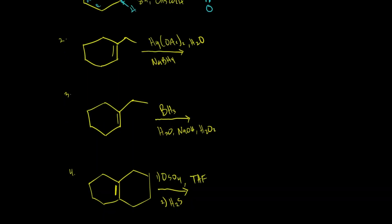Let's go ahead and try to predict the product. I know I have a double bond reacting with oxymercuration-demercuration. Is this going to be Markovnikov or anti-Markovnikov? Well, I don't see any R2O2 or any H2O2, so I'm going to assume I'm going to get my Markovnikov answer. This will be a racemic mixture because I can add that OH from one side or the other side. So that's going to be my final answer — it's going through Markovnikov.